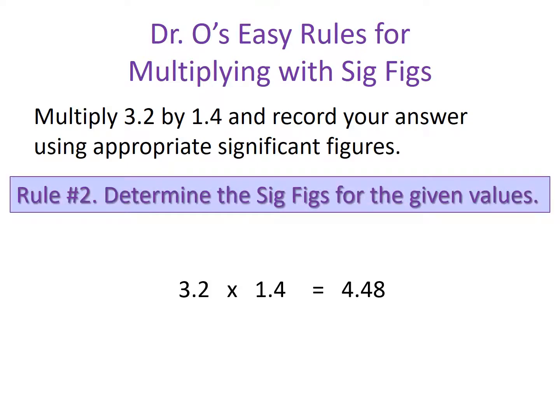Rule number two says determine the significant figures for the given values. Our given values are 3.2 and 1.4. From Dr. Oh's Three Easy Rules for Determining Significant Figures, we know rule number one deals with leading zeros — we have none — and rule number two deals with trailing zeros — we don't have any. Rule number three says all numbers that are not leading zeros or trailing zeros count. So for 3.2, the numbers three and two count, meaning 3.2 has two significant figures.